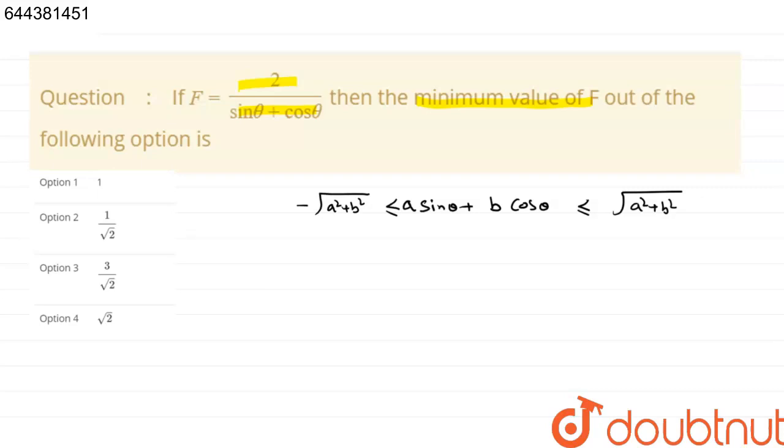So here a is 1 because it is just sin theta, and b is also 1 cos theta. Less than root under a is 1 so 1 squared, b is also 1 so 1 squared, again less than minus root under again 1 squared plus 1 squared.